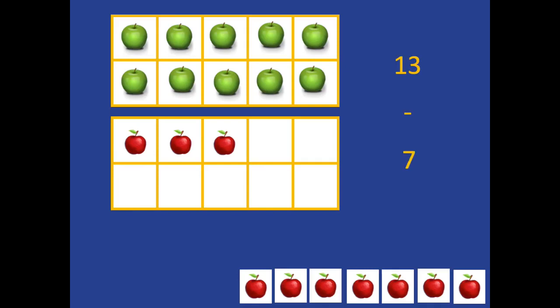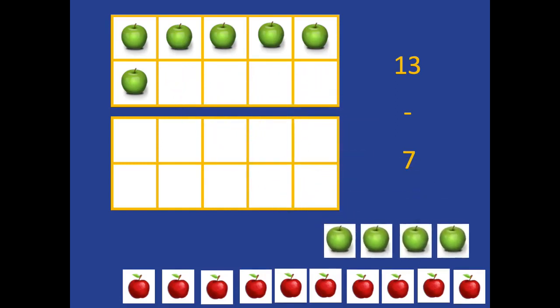Then if they're asked to subtract 7, they're going to do this using their anchor number of 10. First they take 3 of those away to get back to the anchor number of 10. But they didn't only want to subtract 3, they wanted to subtract 7. So they still need to subtract 4 more. And because they know their bonds to 10 very well, it should be easy for them to see and know that the answer will be 6.